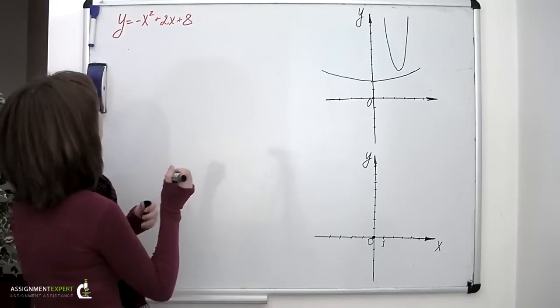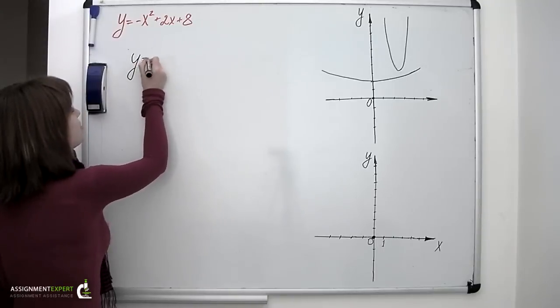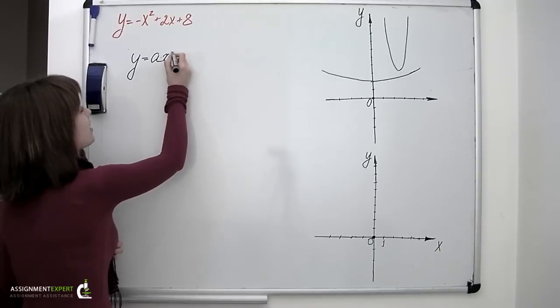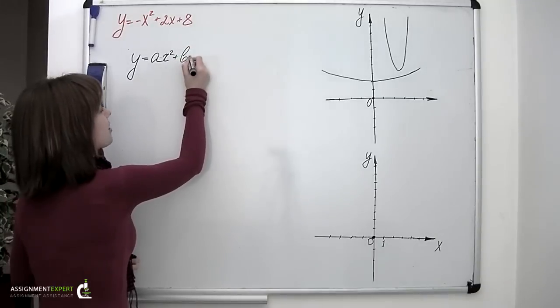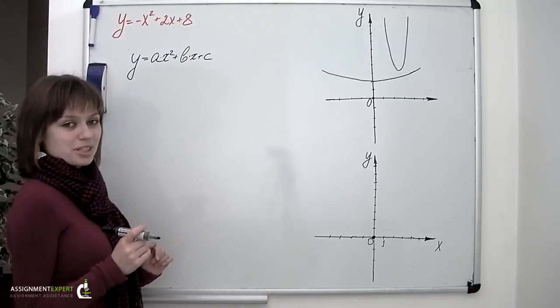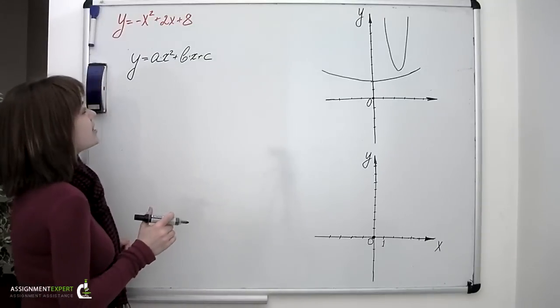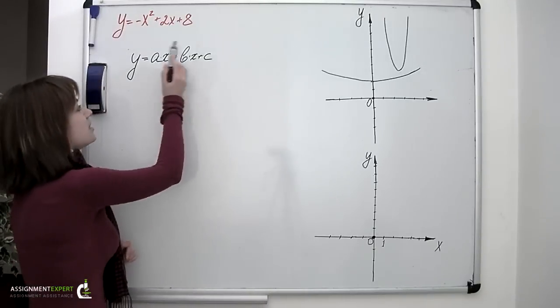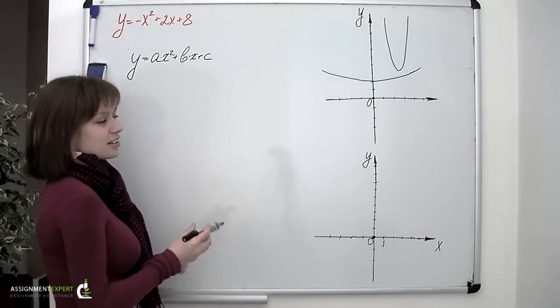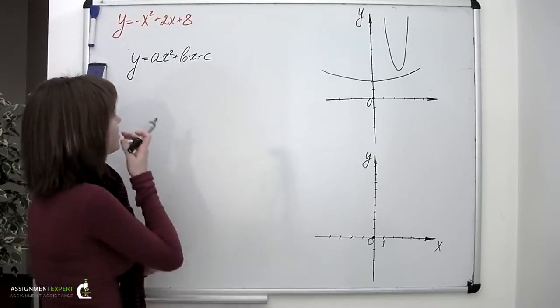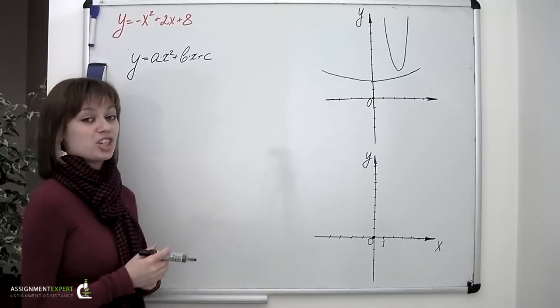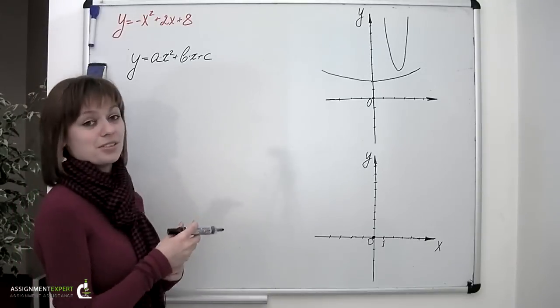In general, parabolas are described by the following equation: y equals a times squared x plus b times x plus c. Parabola is a quadratic function and therefore the highest exponent of the x variable we can meet in the equation of the parabola is 2. And a, b and c are constants which can be of any value. They define the shape of the parabola.